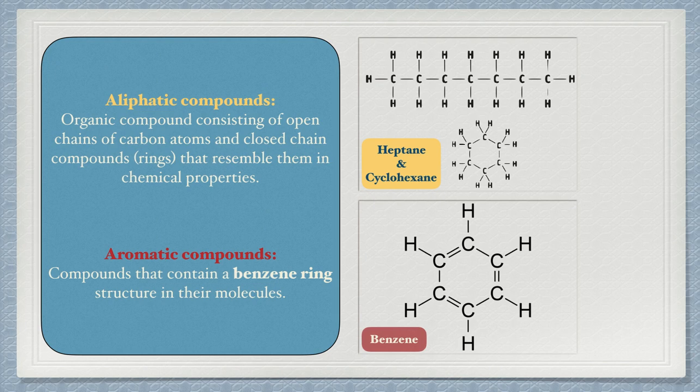You need to know the difference between aliphatic and aromatic compounds. Any compound that consists of open or closed chain compounds is aliphatic, whereas any compound that contains a benzene ring is aromatic. We will now look at benzene in some more detail.